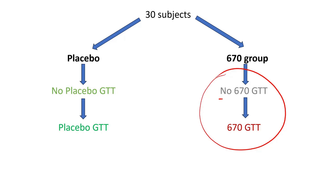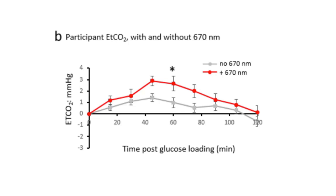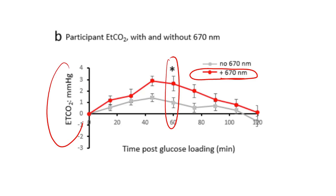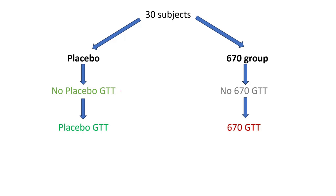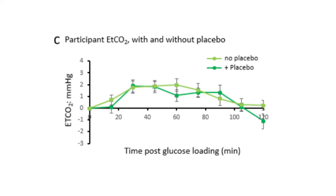Another way to look at it is within the same group — comparing those in the intervention group that had just a glucose tolerance test versus those that had the device strapped on and turned on. There was one point that was statistically significant: in the light group, there was more end-tidal CO2, meaning more carbon dioxide was being made in the mitochondria.